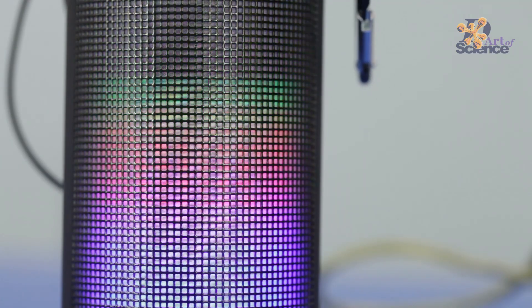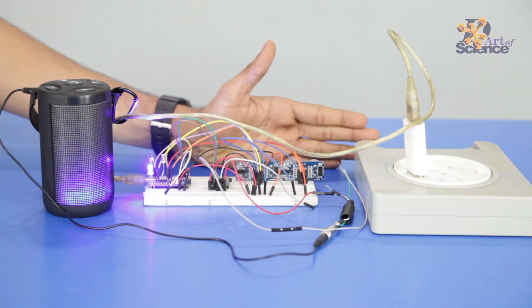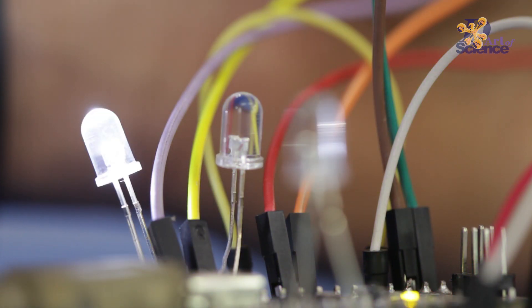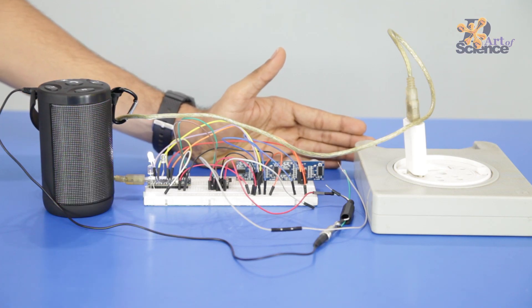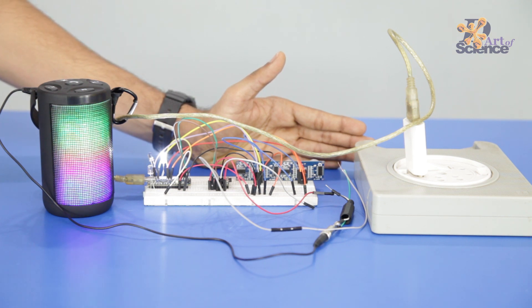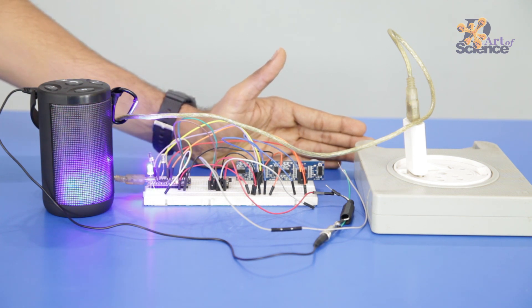Working principle behind the circuit is when the ultrasonic sensor detects the presence of a human, it gives a trigger to the Arduino. The Arduino then communicates with the DF player to play the respective audio track and the Arduino simultaneously switches on the LED.